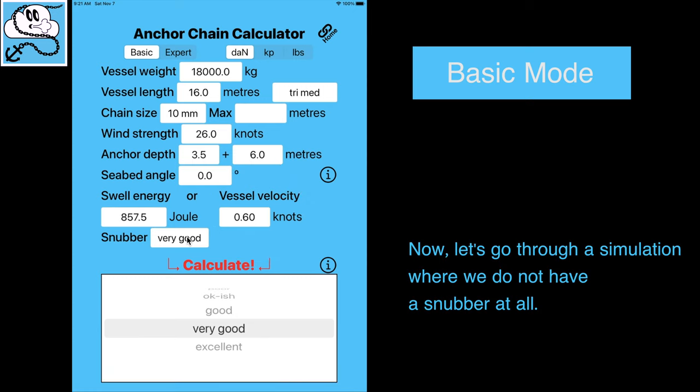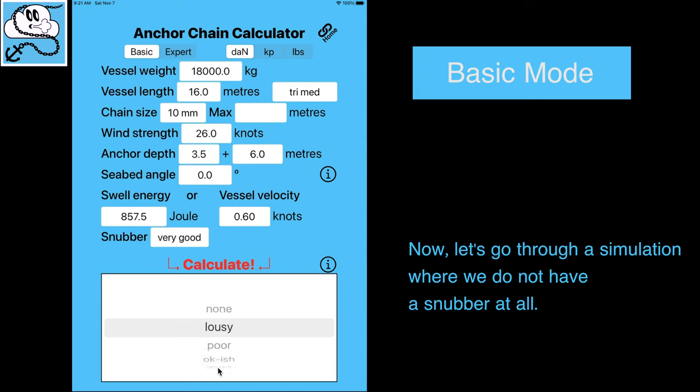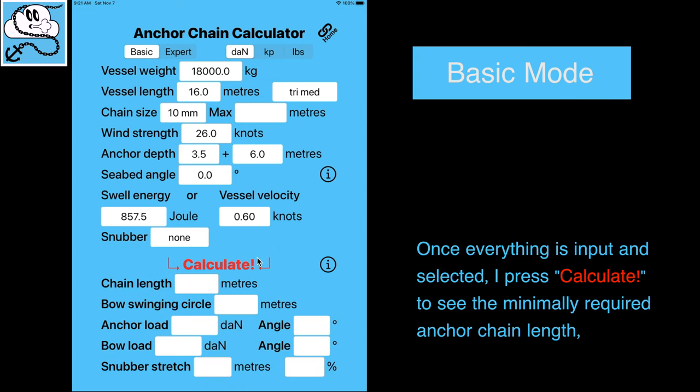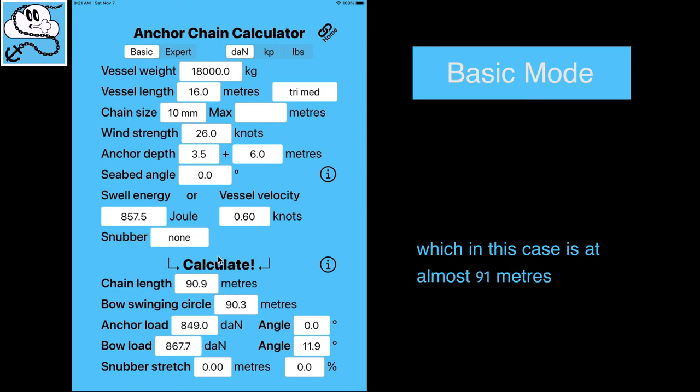Now let's go through a simulation where we do not have a snubber at all. Once everything is input and selected, I press calculate to see the minimally required anchor chain length, which in this case is almost 91 meters,